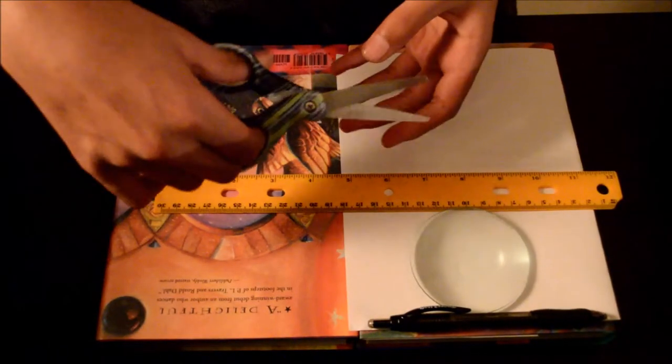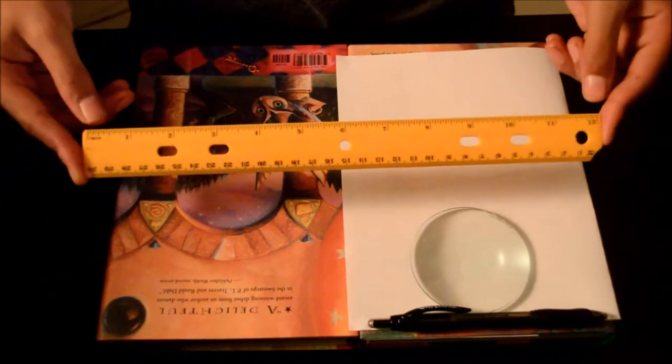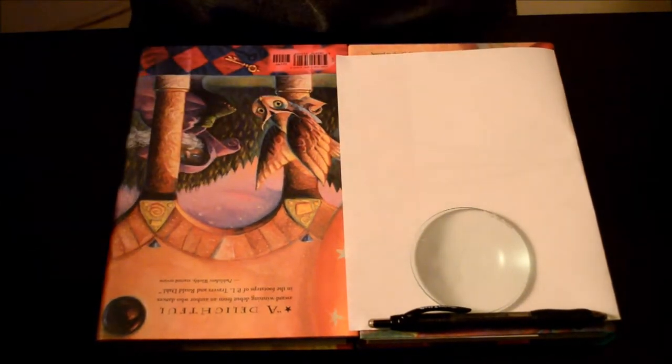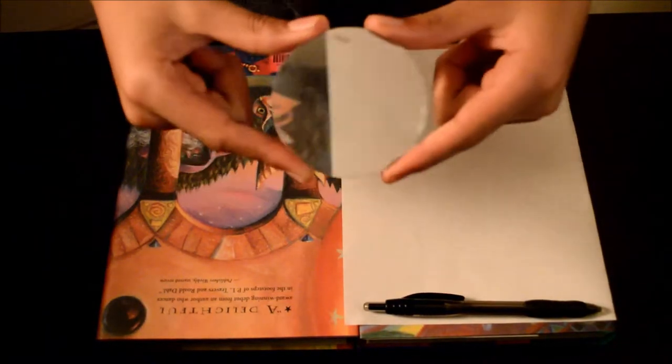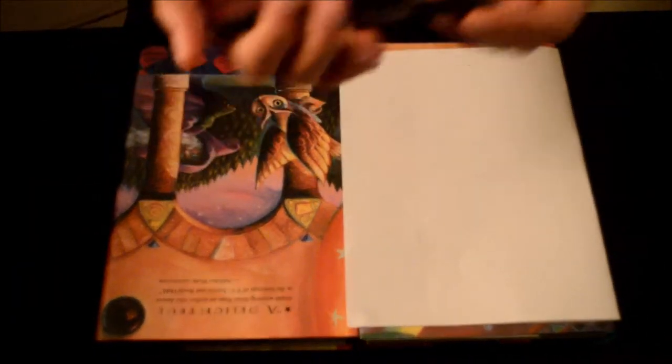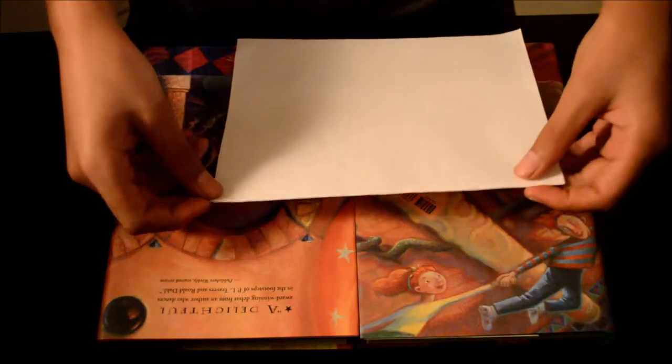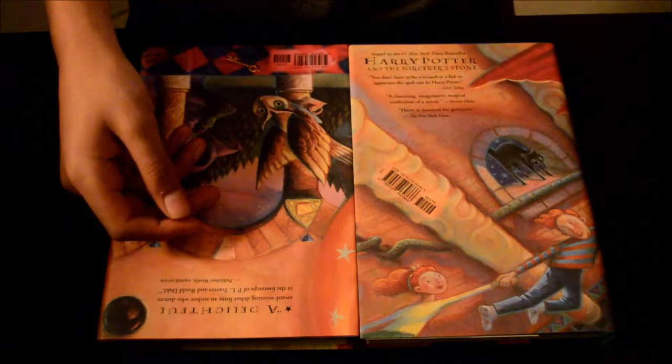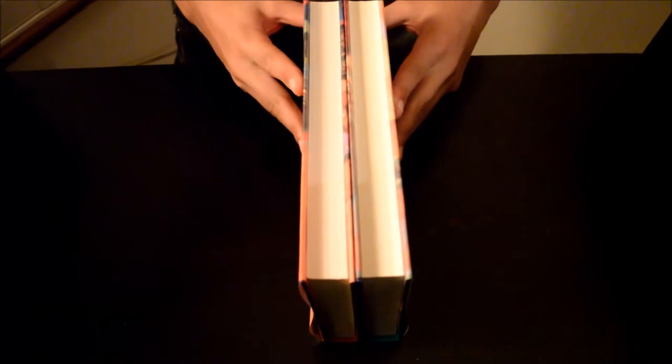You're also going to need some scissors, a ruler, a convex lens, a pen, a blank piece of paper, and two books that are about the same thickness.